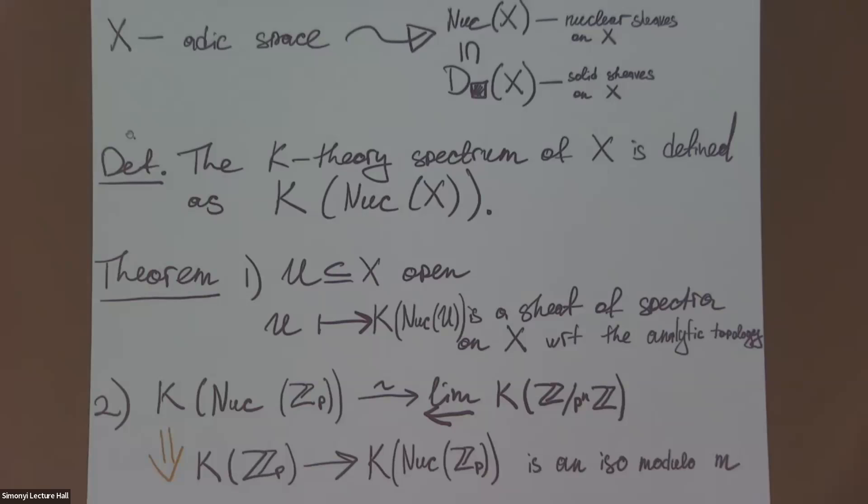Now we can actually prove many results. You can relate globally defined K-theory to its local version. What I mean by that is the sheaf of spectra on X. If you take U, an open subset of your p-adic space, and map it to the K-theory of the category of nuclear sheaves on U, then you'll get a sheaf of spectra. One other property I would like to mention is this continuity result. It turns out that this new K-theory is continuous in the sense that it's exactly the inverse limit of K-theories of quotients of ℤ modulo p^n. From that you can formally deduce that this comparison map from the algebraic K-theory of ℤ_p to this new nuclear K-theory of ℤ_p is an isomorphism modulo m.